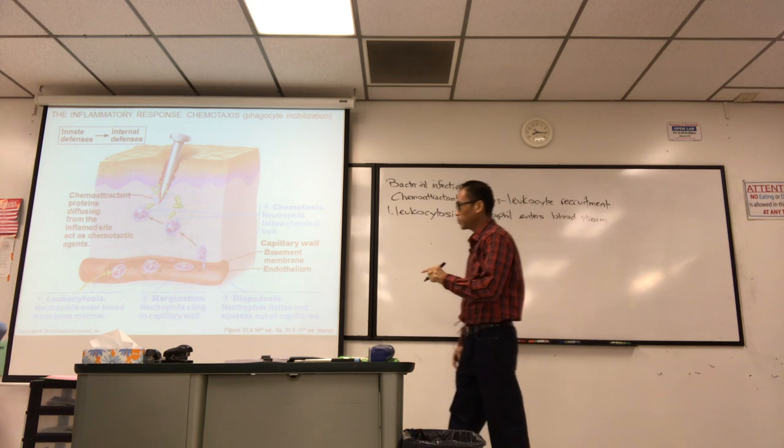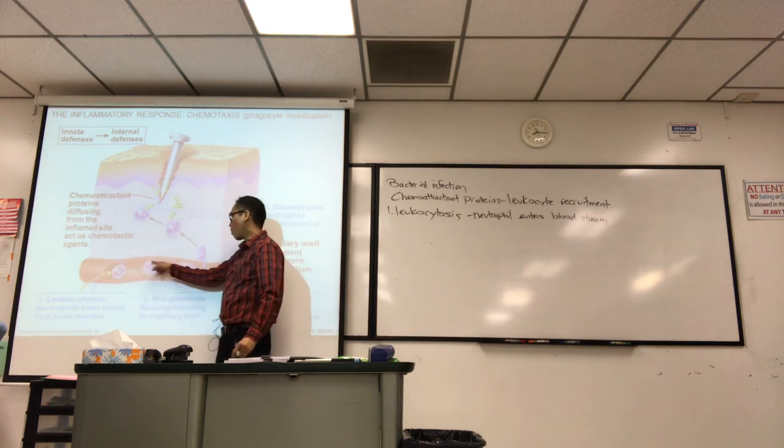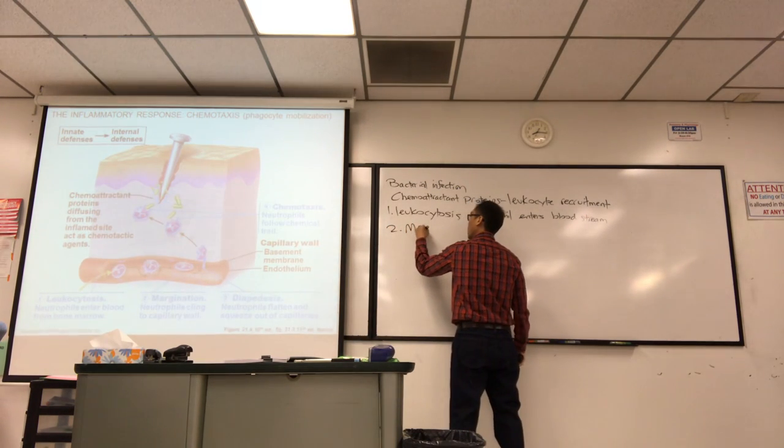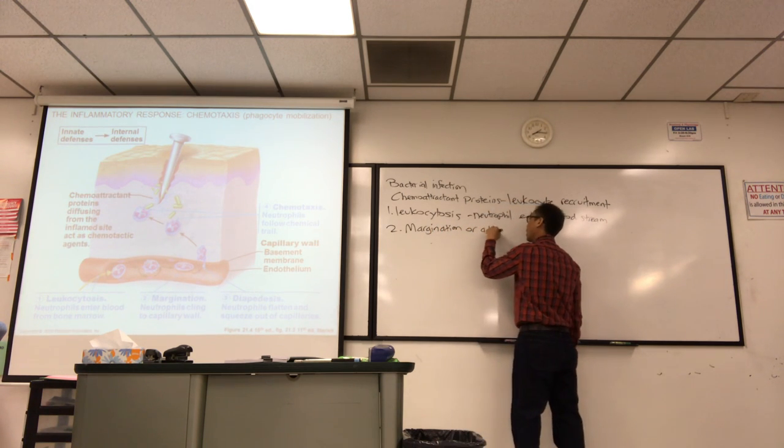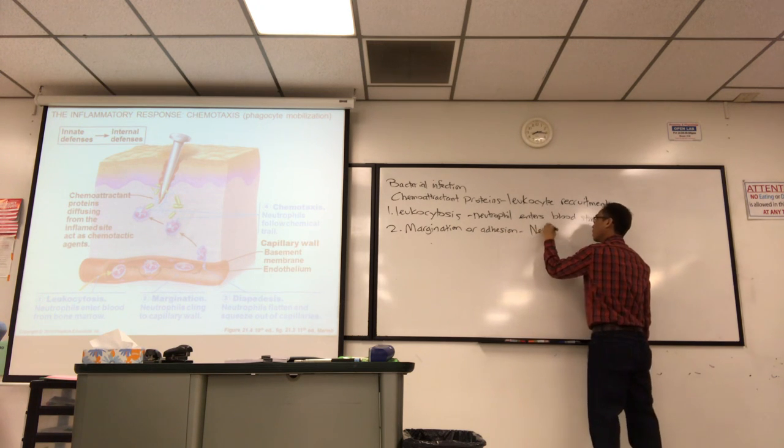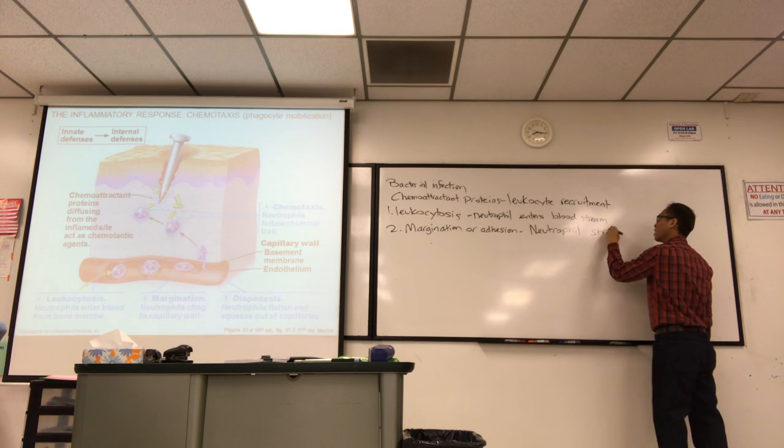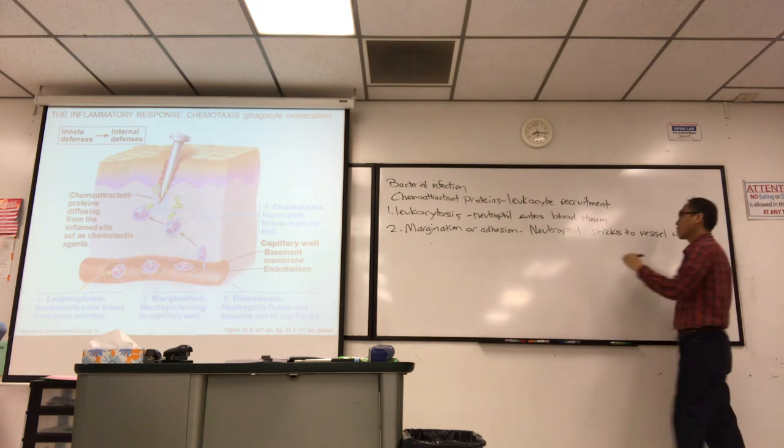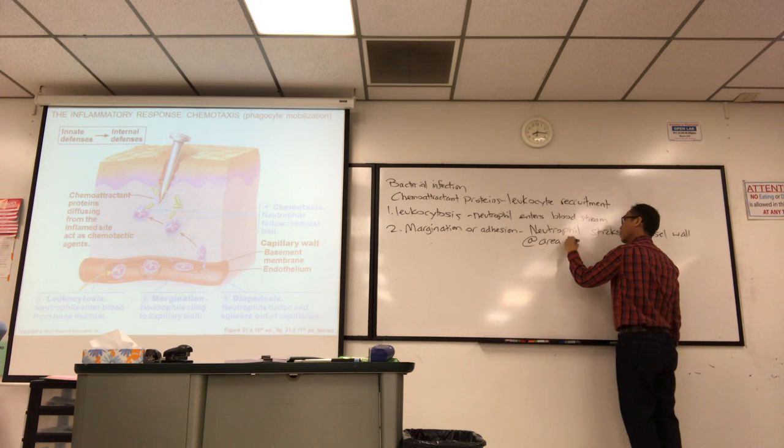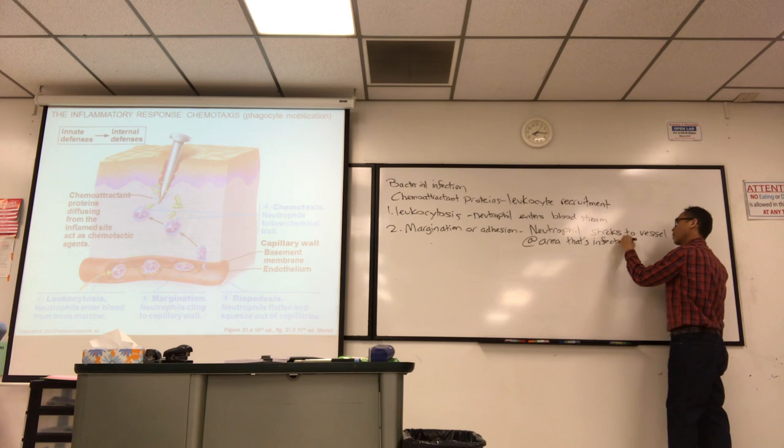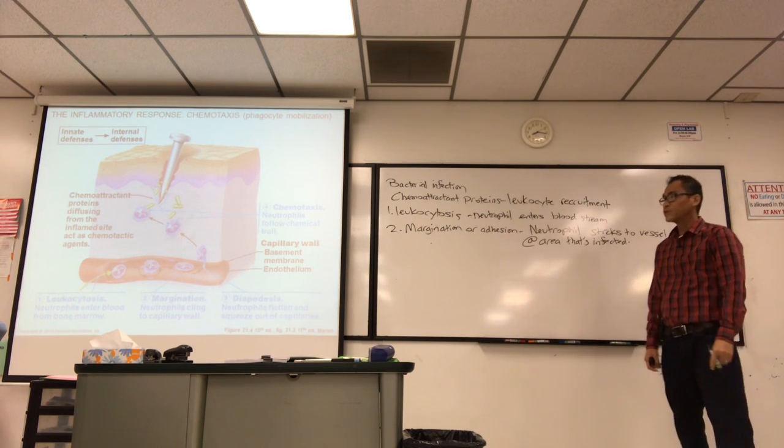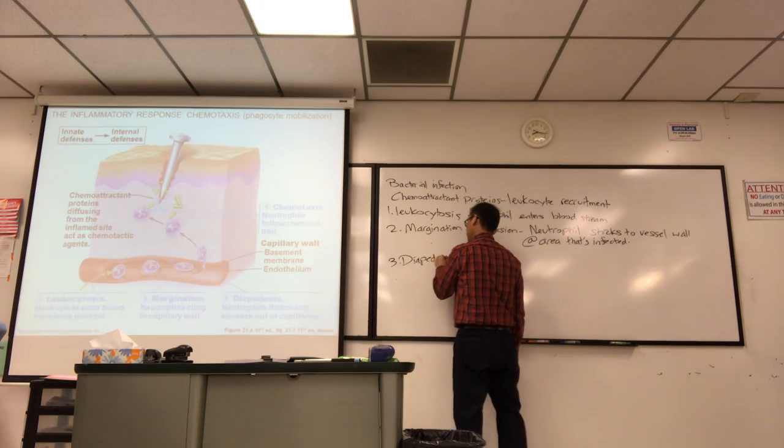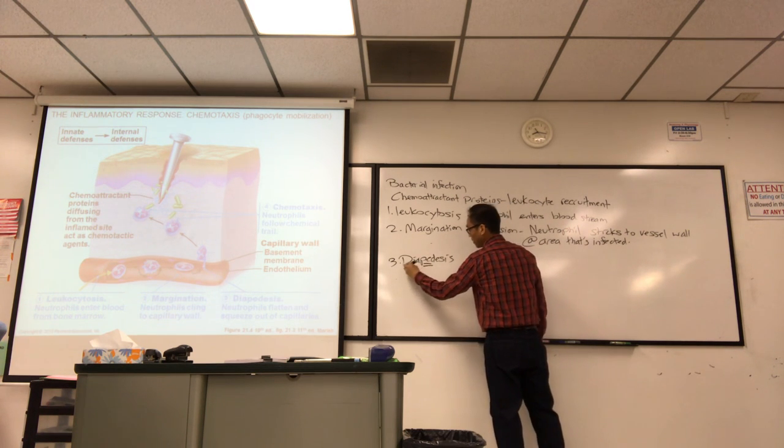The second step, margination. I would call that adhesion. What's happening is the white blood cell is rolling along the vessel wall, it sticks and it stops. They call it margination or adhesion, it sticks there. The next step, we call it diapedesis, which means jump across. Because ped means foot and dia means separate, so jump across.